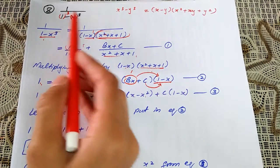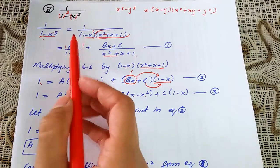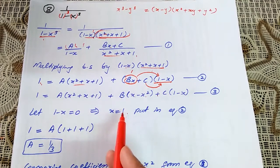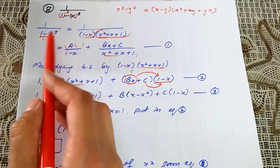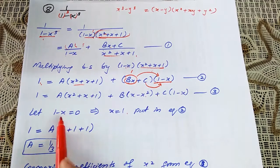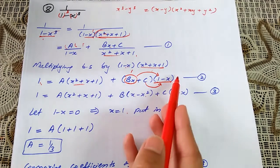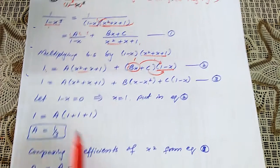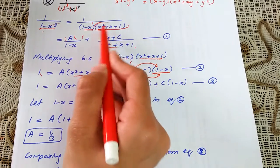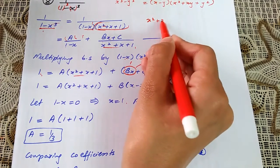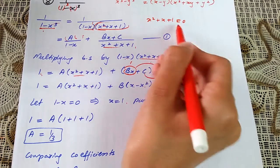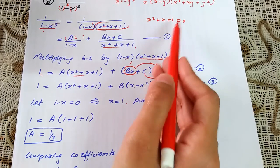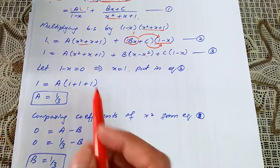In question number 8, continuing from the previous part of exercise 4.4, after equation 3, put x(1 - x) = 0, which gives x = 1. Substituting into equation 2 gives a = 1/3. Now, since we cannot get a real x value from x² + x + 1 = 0, don't solve for x — instead, compare the coefficients.